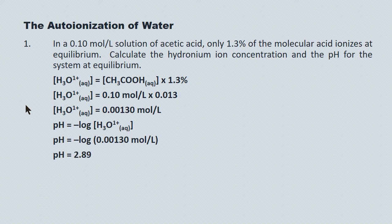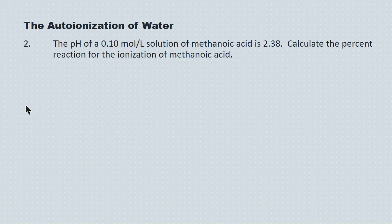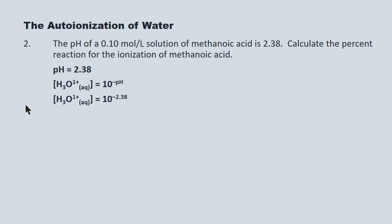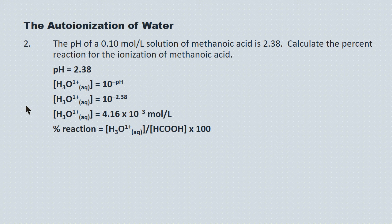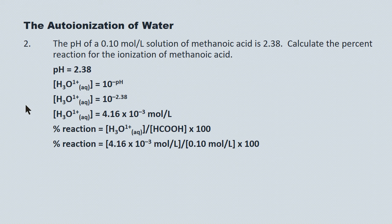The pH of a 0.10 mole per liter solution of methanoic acid is 2.38. Calculate the percent reaction for the ionization. The hydronium concentration equals 10 to the negative pH, so 10 to the negative 2.38, giving 4.16 times 10 to the minus 3 moles per liter. Percent reaction equals that hydronium ion concentration divided by the initial concentration of the acid, times 100. Substituting in, we get a value of 4.17%, which is the percent reaction for the ionization of methanoic acid, reported to two significant digits.